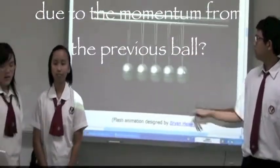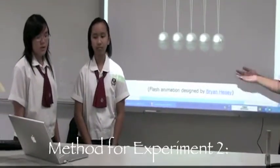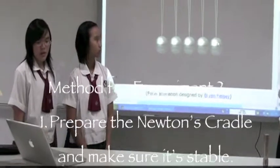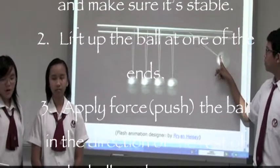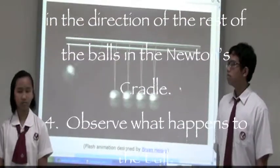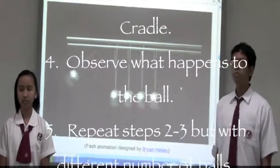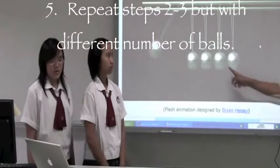The method for the second experiment is: turn the Newton's cradle and make sure it is stable. Hold one of the balls at one of the ends. Apply the force or push the ball in the direction of the rest of the balls in the Newton's cradle. Observe what happens to the ball and repeat this step again through a different number of balls.